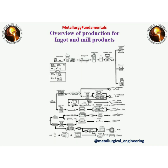An overview of production for ingot and mill products is shown, covering the path from raw material to final products like hot rolled coil, wire, seamless tube, and bar. Production starts from titanium sponge, which is pressed into briquettes. Ingot is produced from a double melting process. These ingots are broken down to blooms using forging, then sent to rolling mills and forging machines to be converted into slabs and billets. Final products are made through various heat treatment and hot or cold rolling processes.